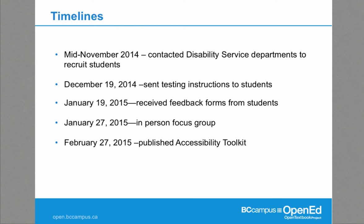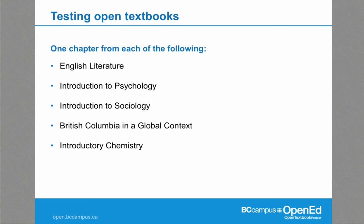Our goal was to get about 15 students to test the open textbooks. In the end, seven students completed written feedback and five students attended the in-person focus group. We gave an honorarium of $150 but it was still difficult to recruit people. We spoke with the disability services offices to identify which students might be best suited to do some user testing. We picked a good cross-section of content and areas that we knew had some accessibility issues.